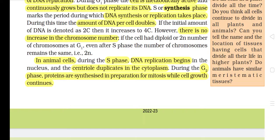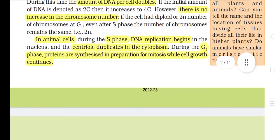However, there is no increase in the chromosome number. If the cell had diploid or 2N number of chromosomes at G1, even after S phase the number of chromosomes remains the same, i.e. 2N. In animal cells, during the S phase, DNA replication begins in the nucleus and the centriole duplicates in the cytoplasm. During the G2 phase, proteins are synthesized in preparation for mitosis while cell growth continues.